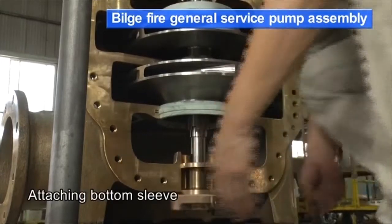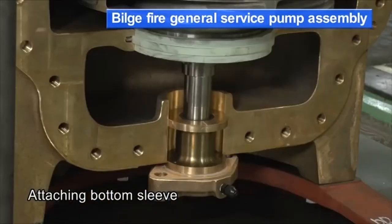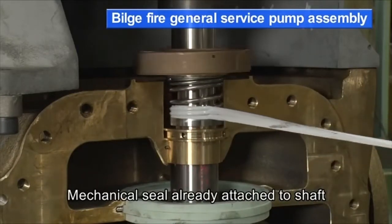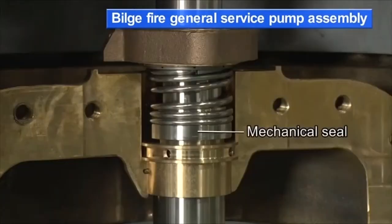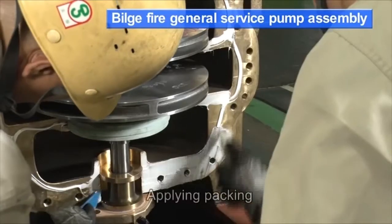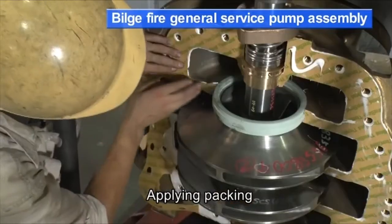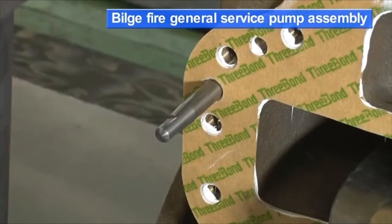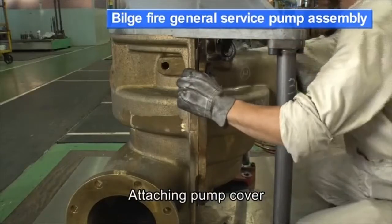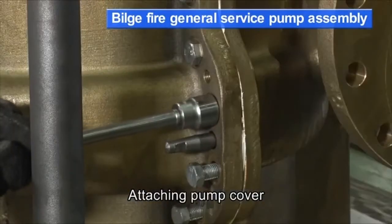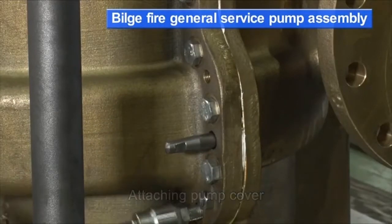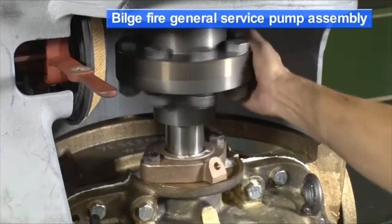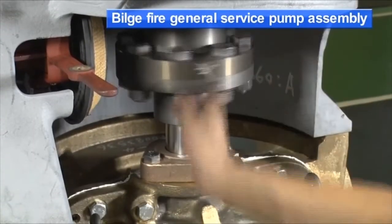The bottom sleeve is attached. The mechanical seal is already fixed on the shaft. The packing is applied. The pump cover is installed. The shaft begins to rotate smoothly.